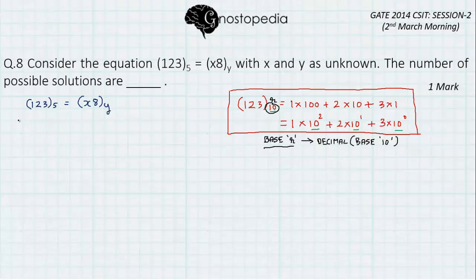So, actually by doing this, we can get (123)₅ as 1×5² + 2×5¹ + 3×5⁰ which is equal to x×y¹ + 8×y⁰.